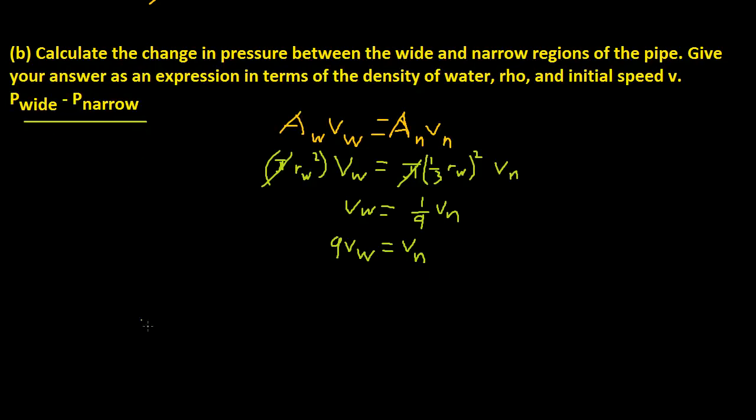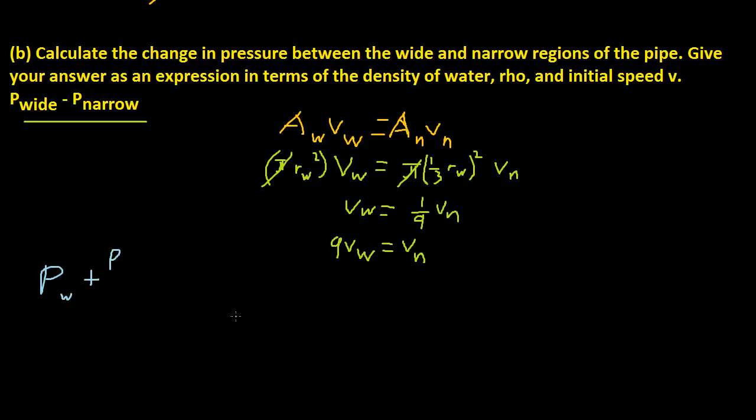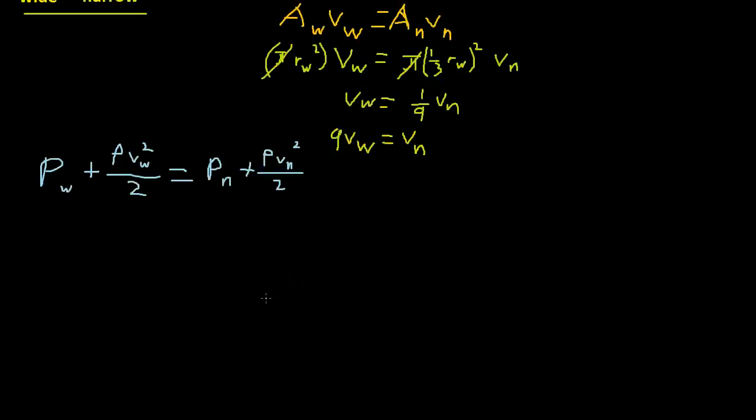And in order to solve for this we can use Bernoulli's equation. So let's go to Bernoulli's equation. So P wide plus rho, and since this is a horizontal pipe we don't have to deal with gravity and height, so rho v wide squared over 2 equals pressure of the narrow plus rho v narrow squared over 2.